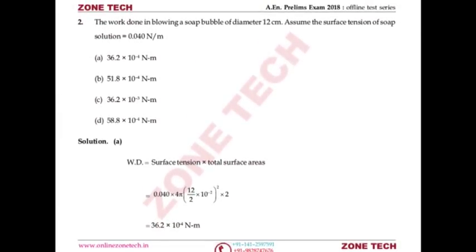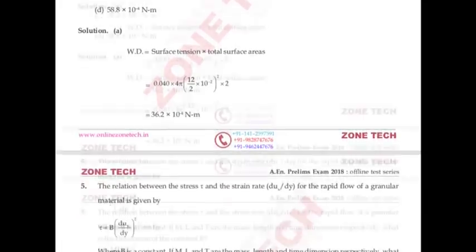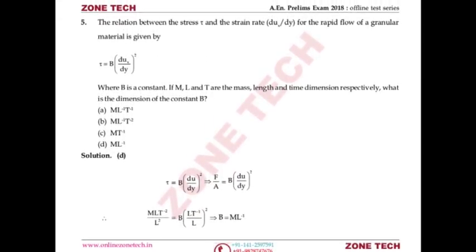Question number 2: The work done in blowing a soft rubber bubble of diameter 12 cm; assume the surface tension of soap solution is 0.040 N/m. The question asks how much surface energy is required to form a soap bubble. Work done = surface tension × total surface area. Since a soap bubble has a double layer, surface area is taken as two times. When multiplied, answer comes out as A.